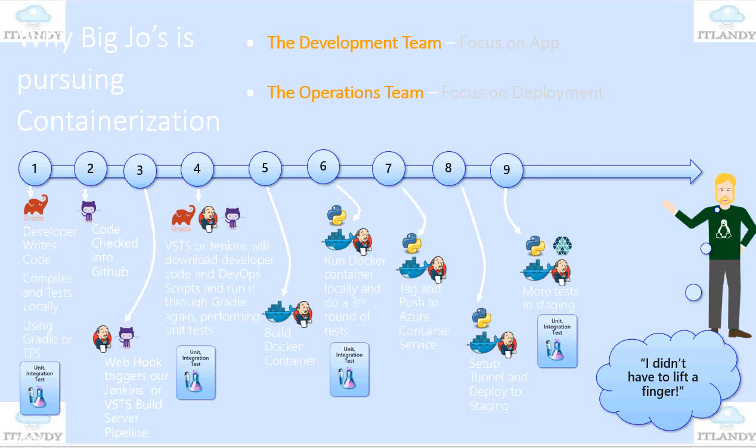Then it builds a Docker container. After that, you run the Docker container locally and do a third round of tests — this time unit integration tests. Then you tag and push to Azure Container Registry (ACR), or it could be Nexus or somewhere else; it doesn't need to be Azure. Then you set up the tunnel and deploy to staging, where you can do more testing. Mr. Biggio did not lift a finger to do all these activities, assuming you have automation in place.